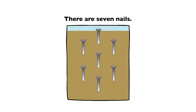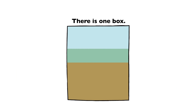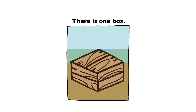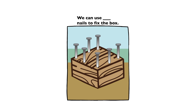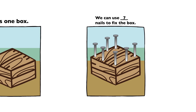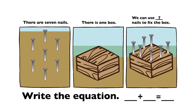There are 7 nails. There is one box. We can use 7 nails to fix the box. 7 divided by 1 equals 7.